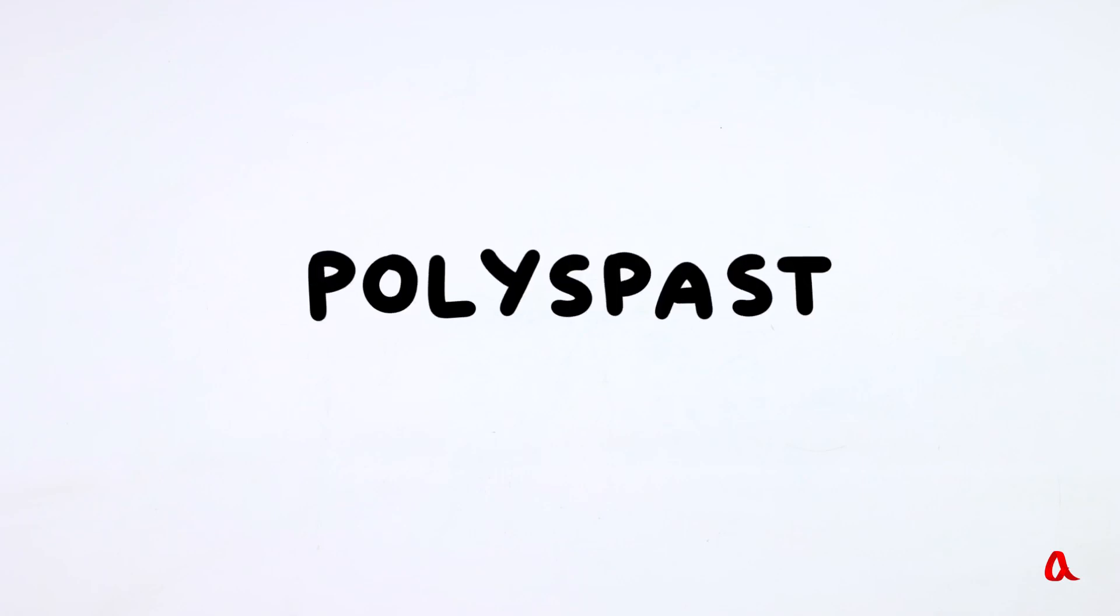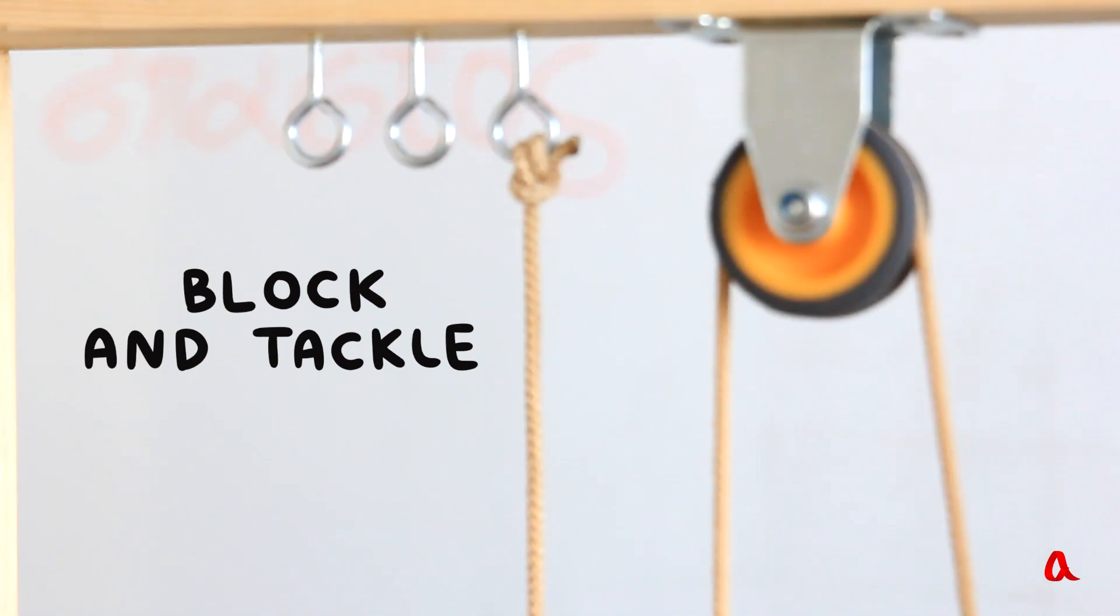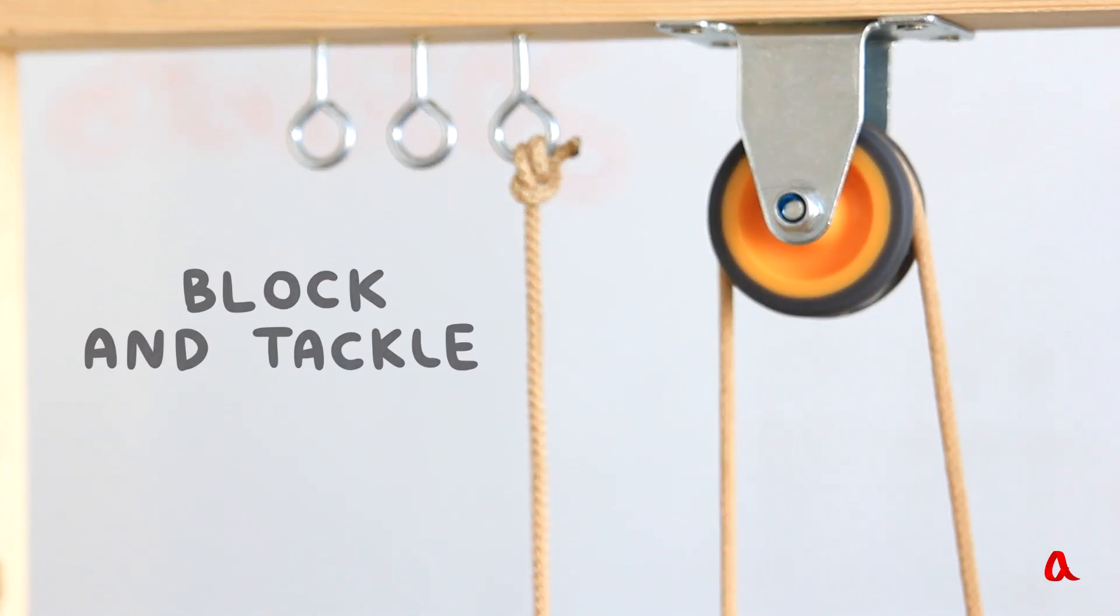In Greek, the word polyspast means a mechanism consisting of multiple blocks. A block and tackle system allows gaining a significant mechanical advantage, which is clearly due to an equivalent loss in distance.